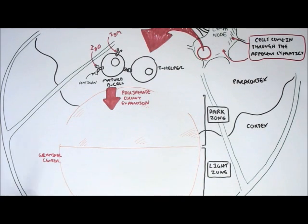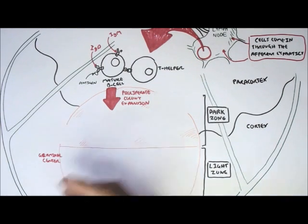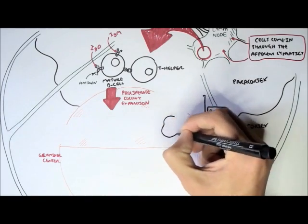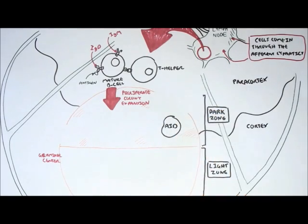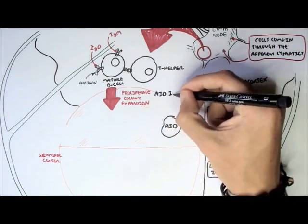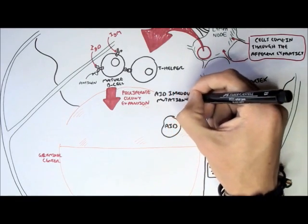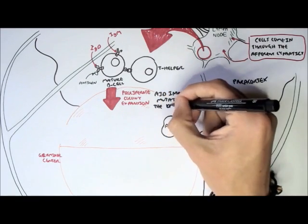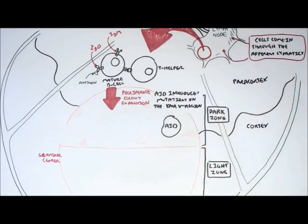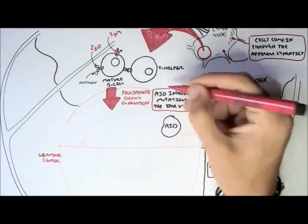Now it is thought that the mature B-cell, when it proliferates into cells called centroblasts, an intracellular enzyme called AID will introduce mutations, point mutations, on the variable region of the DNA, so the variable region that encodes for the variable region of the antibody.